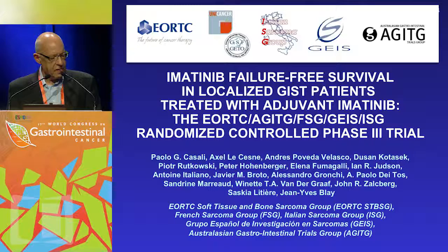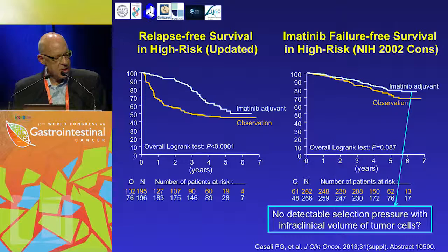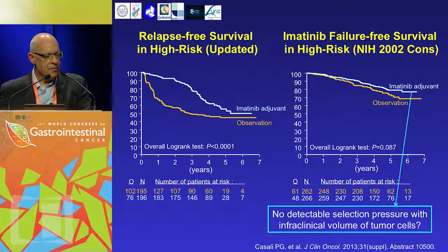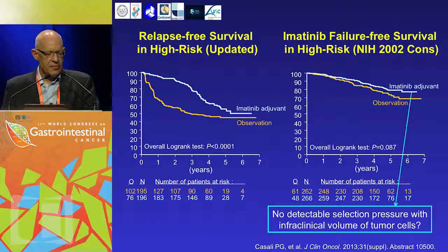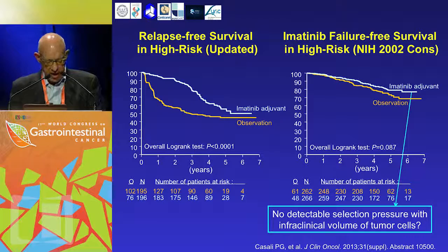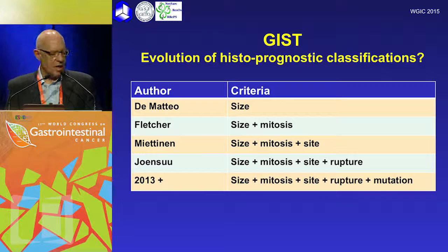The EORTC study, involving a number of cooperative groups including the Australian group, reported last year at ASCO with a manuscript submitted. In the high-risk group there is a big difference for two years of treatment versus no treatment — not surprising, as patients with high-risk tumours are going to relapse. In terms of the intermediate endpoint of imatinib failure-free survival, that's not significant between the two curves, though there's a trend suggesting patients receiving imatinib are better off. It remains to be seen whether that translates into a survival benefit.